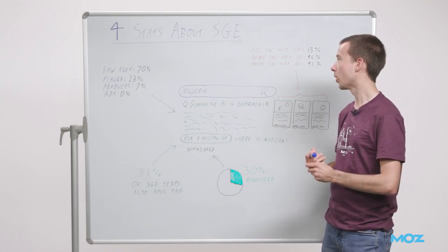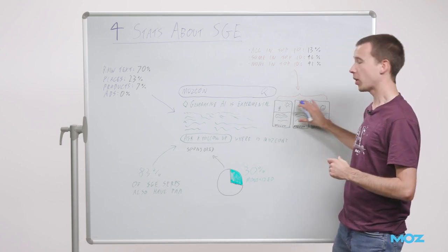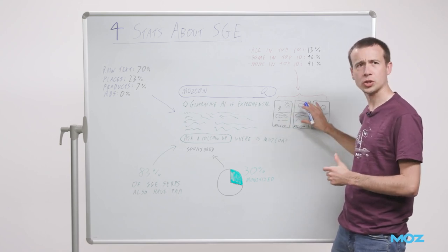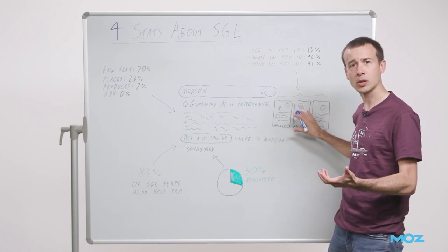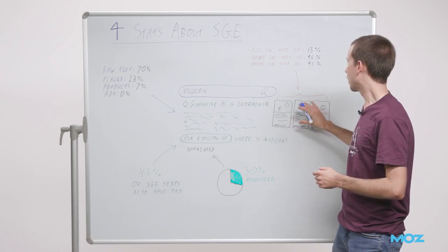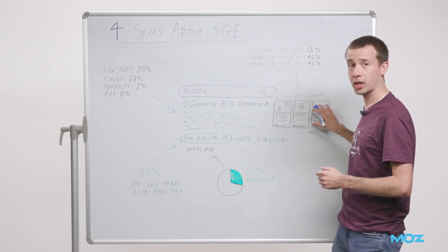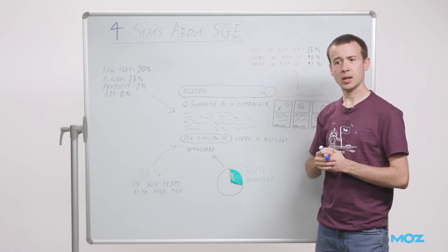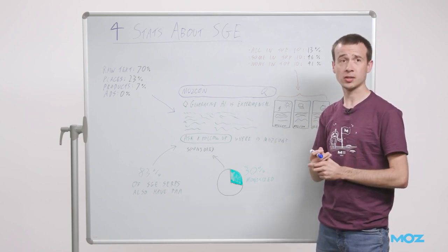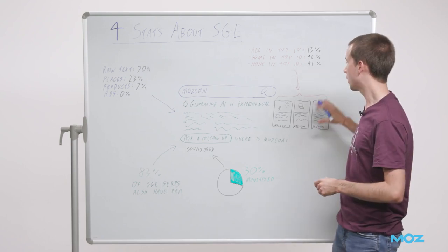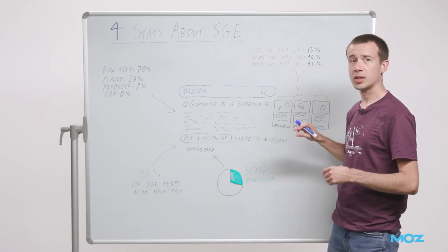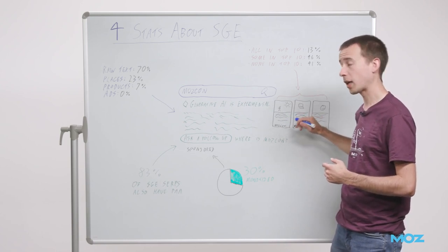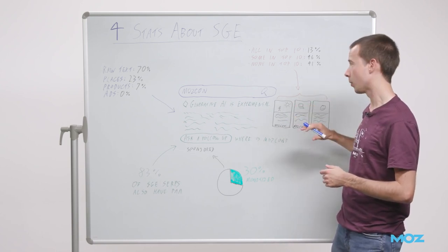So what are the stats I want to share with you? Well, these three links are very interesting. You might reasonably assume this would just be the top three organic results or something like that, but actually that's not the case. In only 13% of cases in the 100 SGE SERPs that I studied were all three of these links actually present in the top 10 organic.